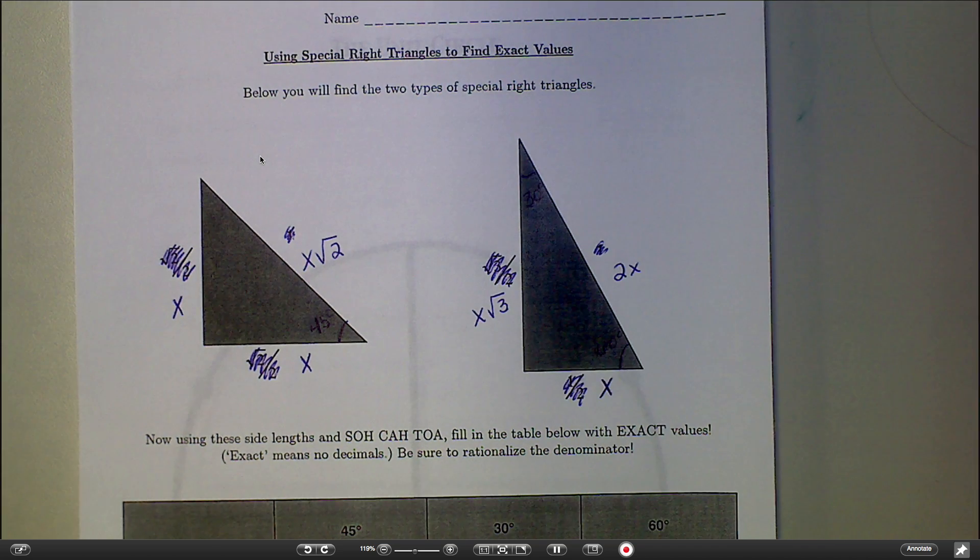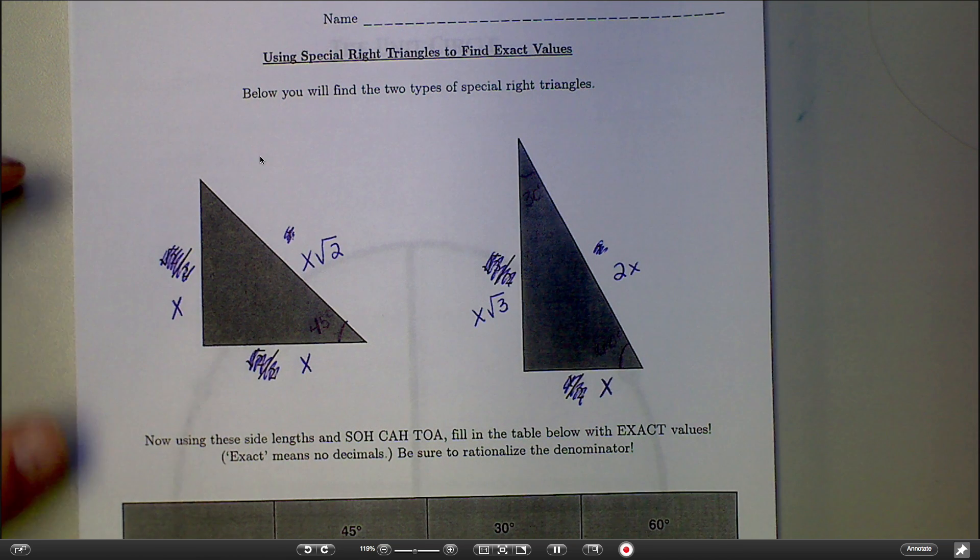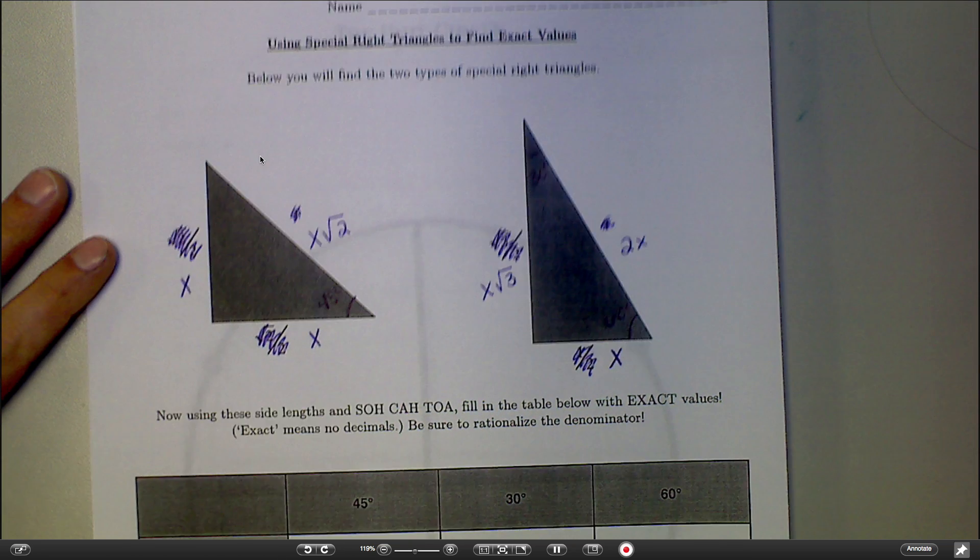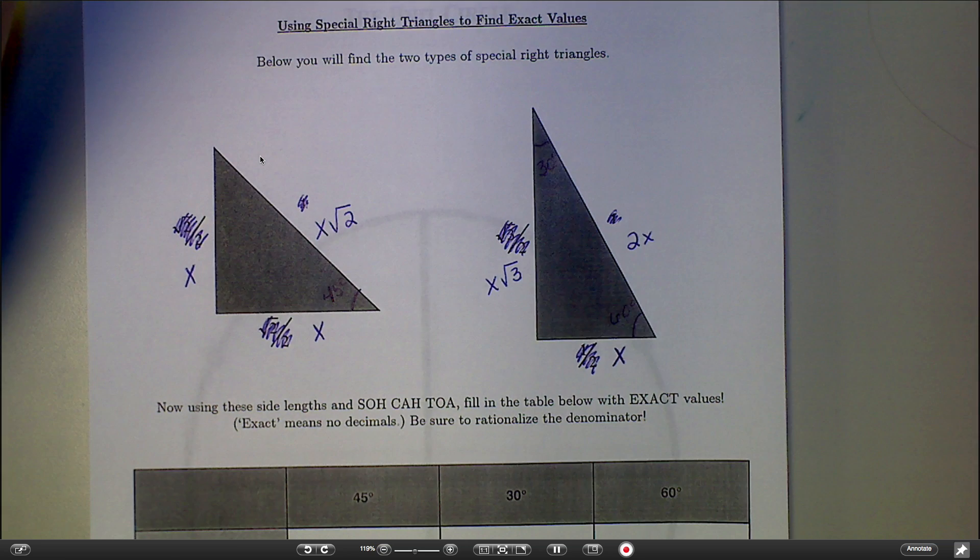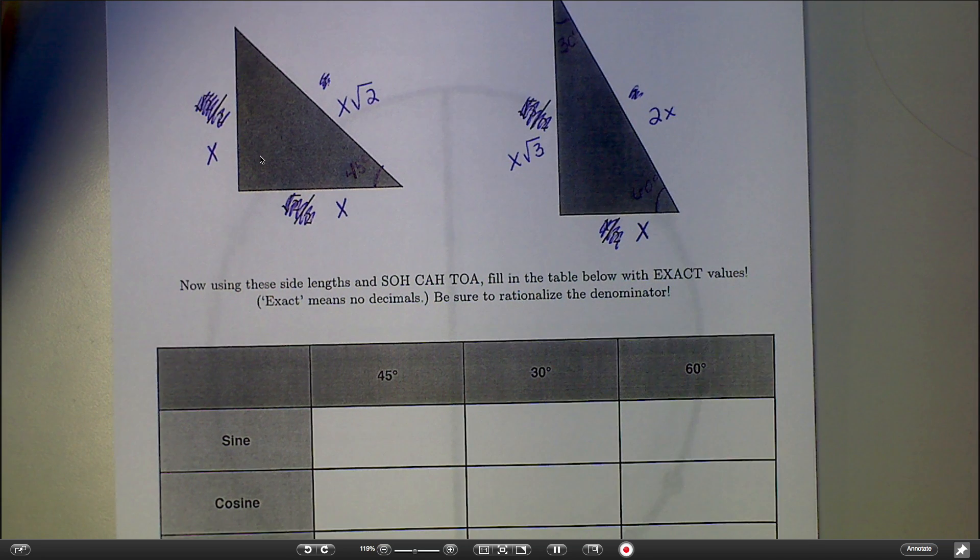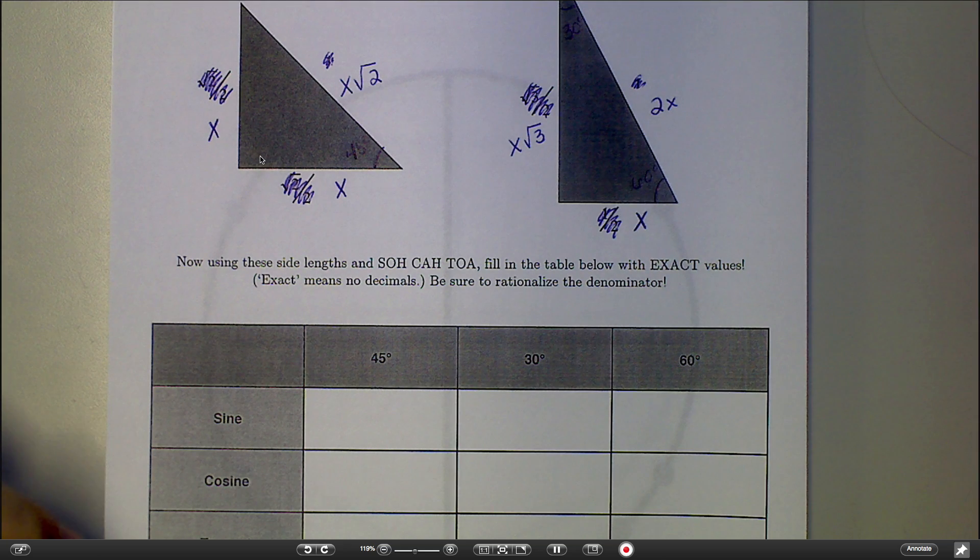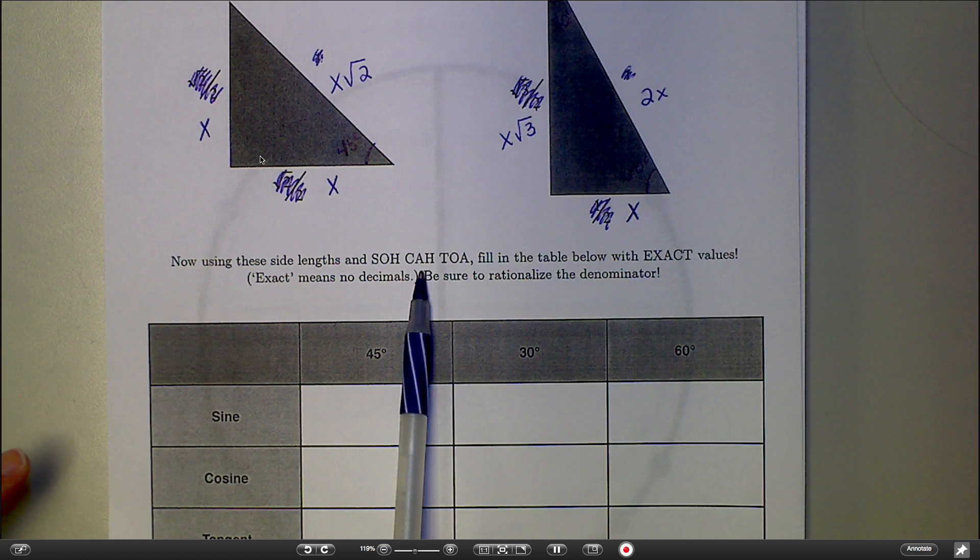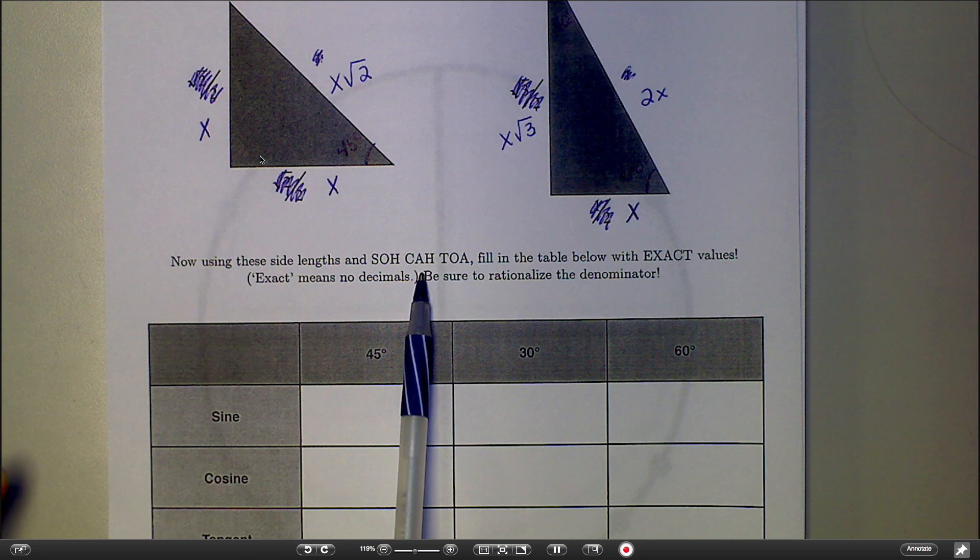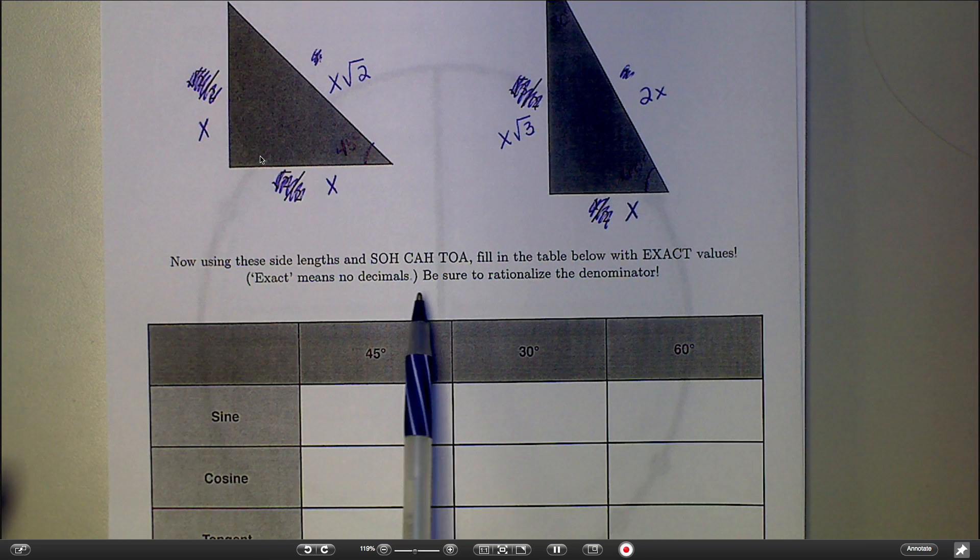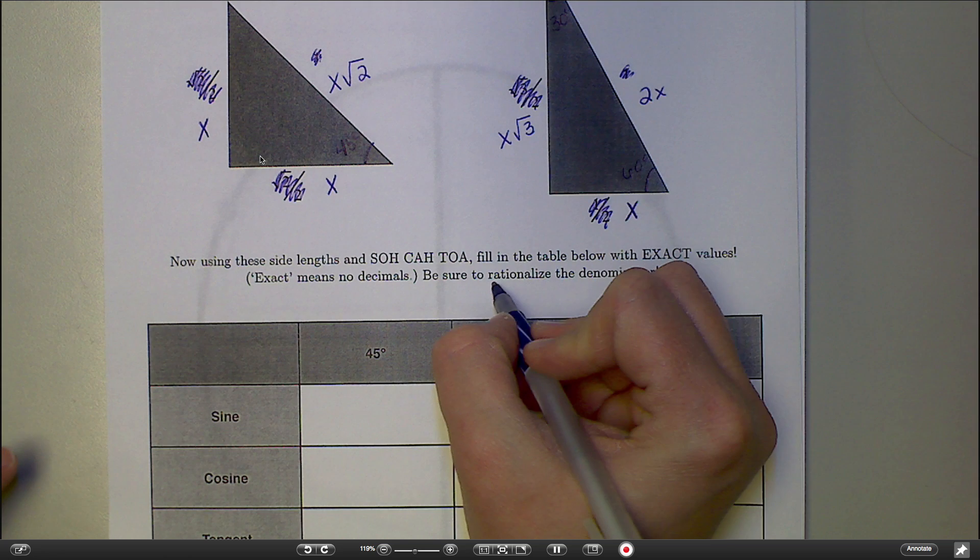The whole goal for today is to find exact values for sine, cosine, and tangent of these three angles: 45, 30, and 60. That's going to lead right into what we're doing with the unit circle next. We're going to set these up using SOHCAHTOA and simplify them as much as we can. That might involve some rationalizing, and we'll talk about that in just a minute.